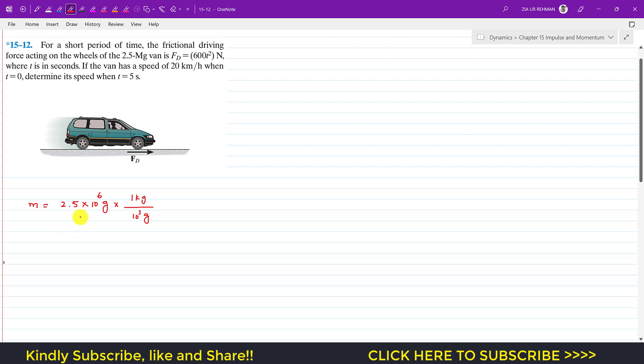If we divide this, we will get 2.5 times 10 to the power 6, which will become 10 to the power 3. And 2.5 times 10 to the power 3 gives us 2500 kg. So the mass in kg is 2500.